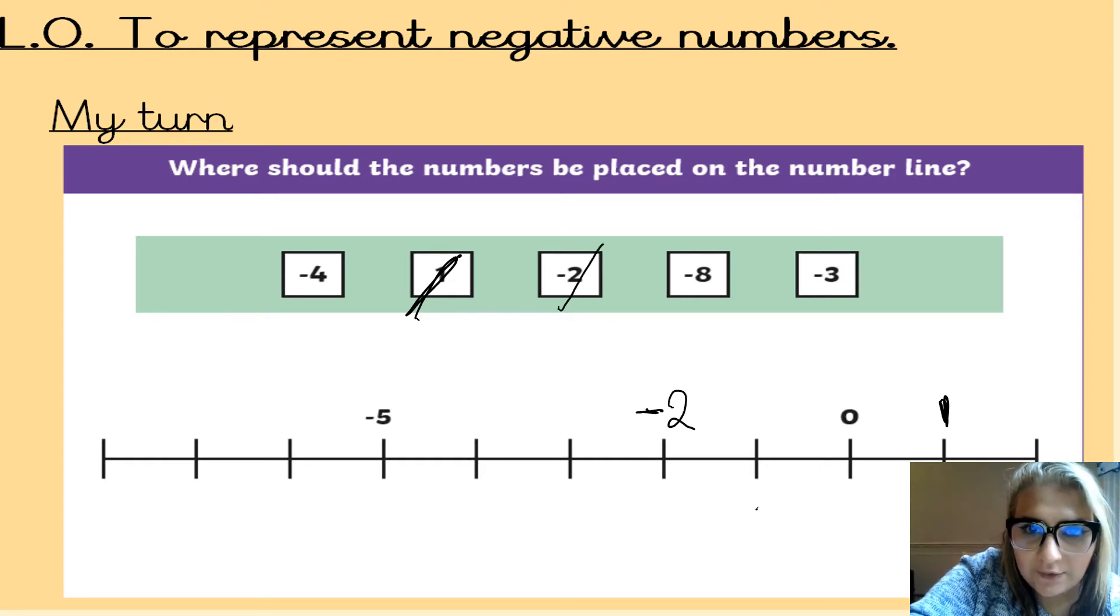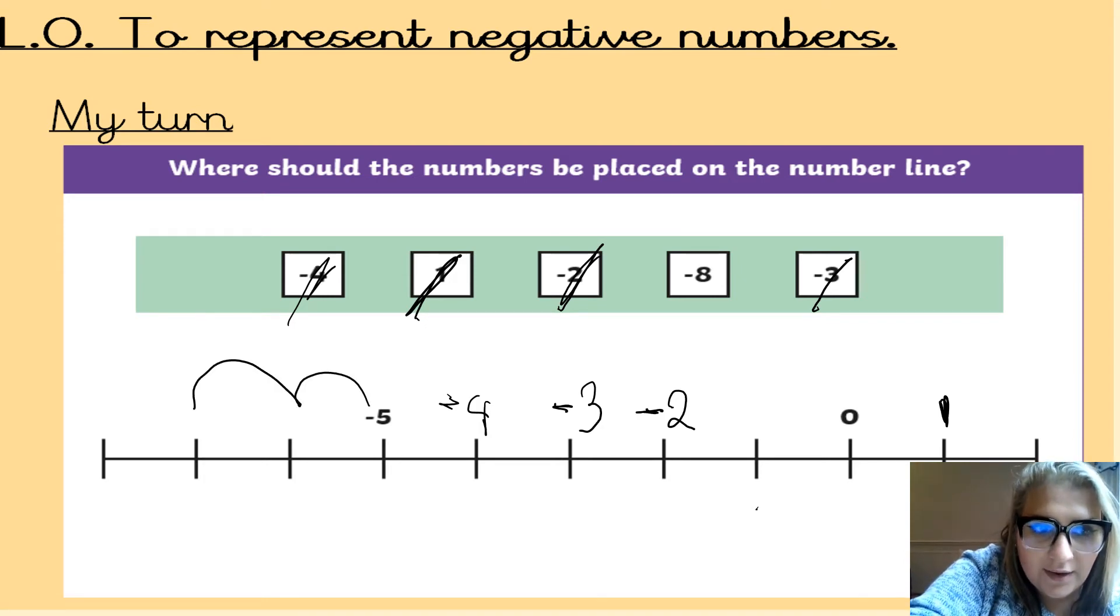I can cross that one off my list. Then, I've got minus three, which goes straight after minus two. Cross that one off. And minus four. Cross that one off my list. Now, I've got minus eight. So, minus five, minus six, minus seven, minus eight. So, I can cross that one off my list.